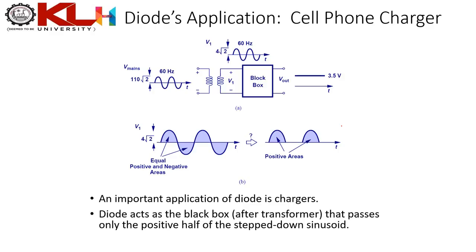One of the most common diode applications we use daily is the cell phone charger. You plug it into a wall socket — in India wall sockets supply 230 V RMS at 50 Hz, while in the US it is 110 V AC at 60 Hz.